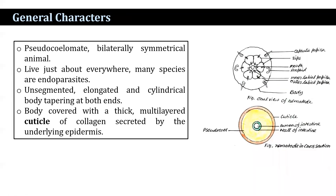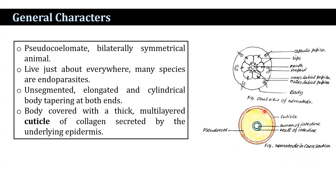What are the general features of nematodes? They are pseudocoelomate. A coelom is an internal fluid-filled body cavity that lies between the gut and outer body wall musculature, lined with tissue derived from embryonic mesoderm. Animals that possess such a body cavity are known as coelomates or eucoelomates. But in the case of nematodes, they are pseudocoelomate — that means the body cavity has no mesodermal lining. The body is bilaterally symmetrical and covered with a thick multi-layered cuticle of collagen secreted by the underlying epidermis.